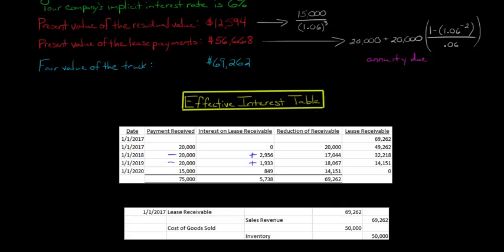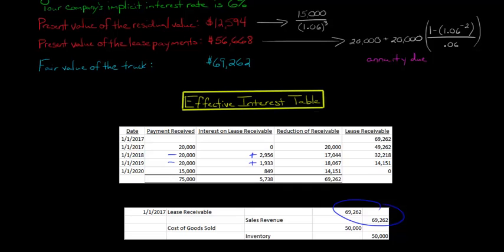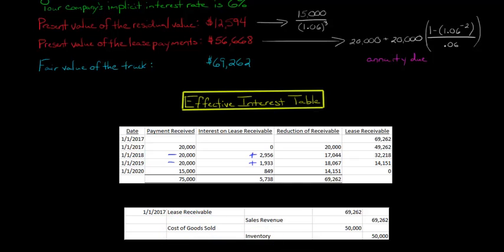Up front on day one — January 1, 2017 — we debit lease receivable and credit sales revenue for $69,262. That's the present value of the lease payments plus the present value of the residual value. We also debit cost of goods sold and credit inventory for $50,000 — I'm using $50,000 as the assumed cost; in practice, you'd know the actual cost of the item for your company.